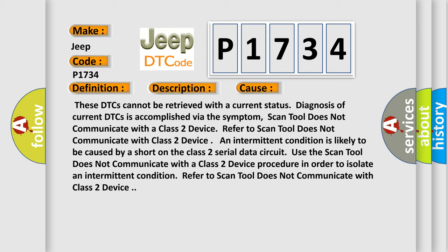Scan tool does not communicate with a class 2 device. Refer to scan tool does not communicate with class 2 device. An intermittent condition is likely to be caused by a short on the class 2 serial data circuit. Use the scan tool does not communicate with a class 2 device procedure in order to isolate an intermittent condition.